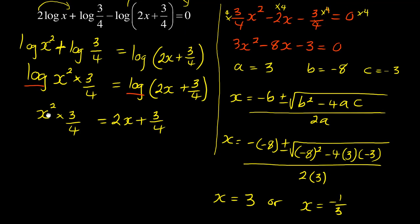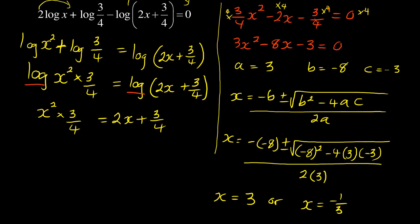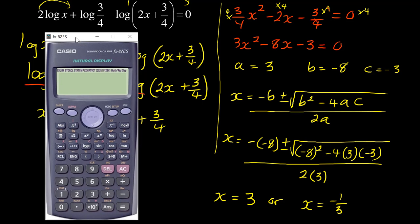If I take x equals 3 to the original equation, it is 2 log base 10 of 3 plus log of 3 over 4 minus log of 2 times 3